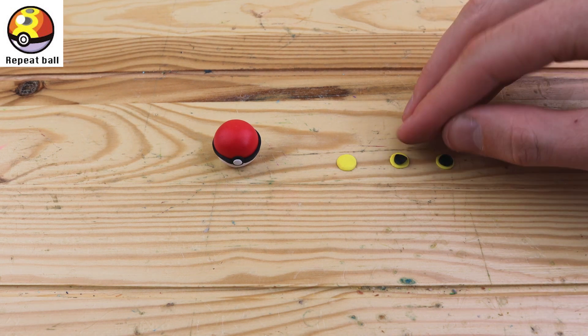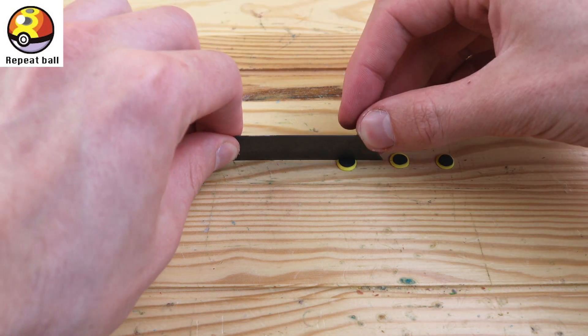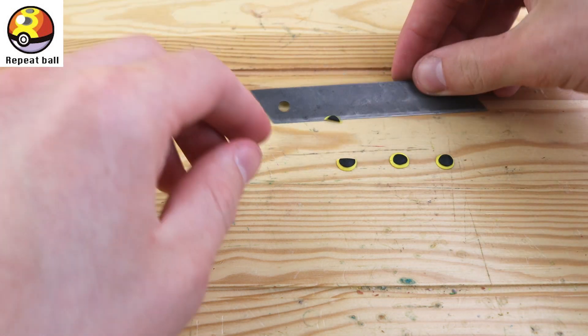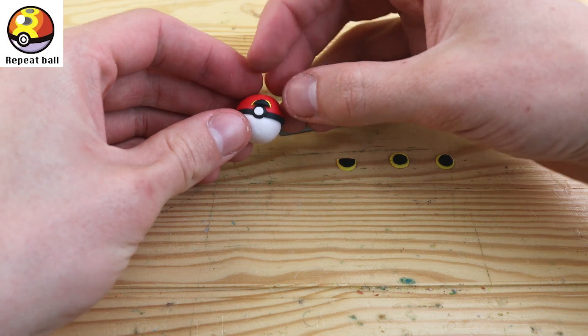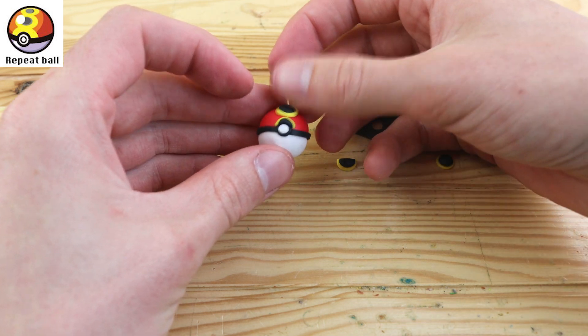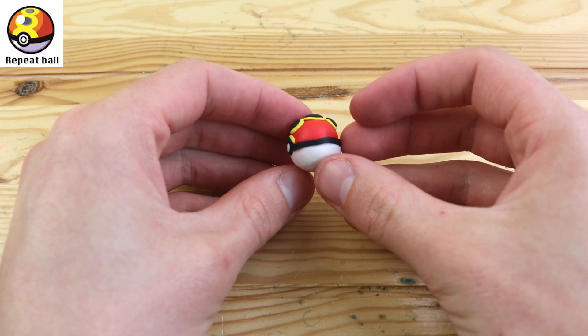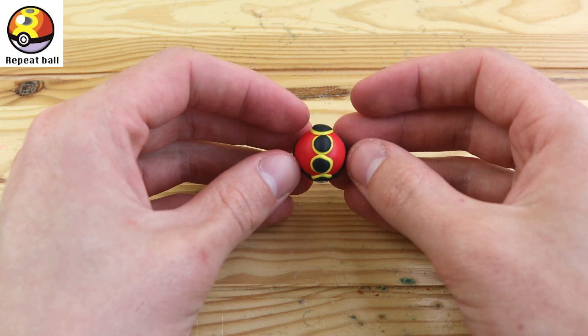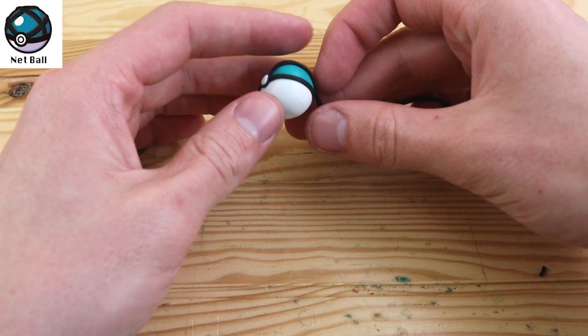Moving on, we have the Repeat Ball. This Pokéball is more likely to succeed if the Pokémon is already registered as caught in the trainer's Pokédex. To me, this seems like sort of a pointless Pokéball. I can't imagine you would use it very often. But like I said before, it's nice to have a little bit of variety.